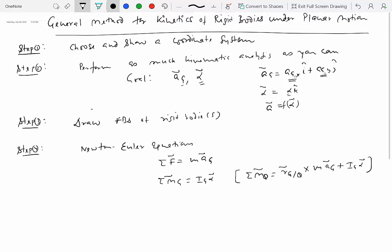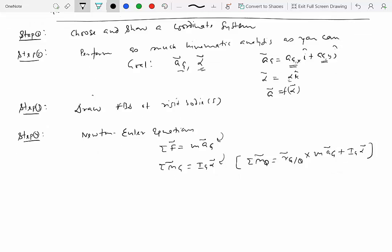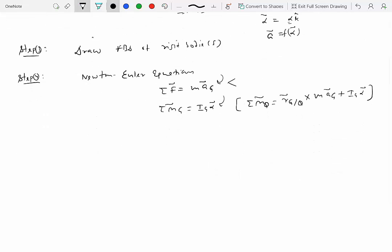So now you will notice that if you know Ag and alpha from step number two, you can substitute them in here on the right hand side. And then hopefully you will have just the enough number of unknowns and the enough number of equations to solve for them. How many equations will you have? How many scalar equations? This will give you two scalar equations in a plane. This will give you only one equation, which will be along k-hat direction perpendicular to the plane. So you'll have three equations altogether from here and will be able to solve for three unknowns.